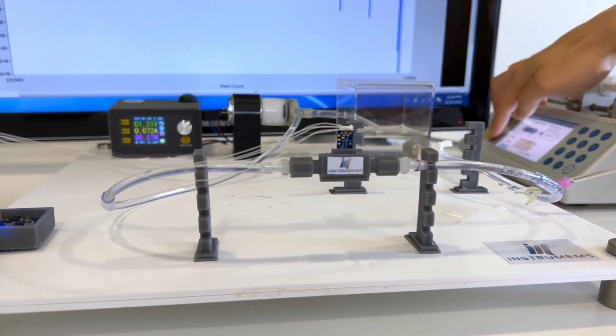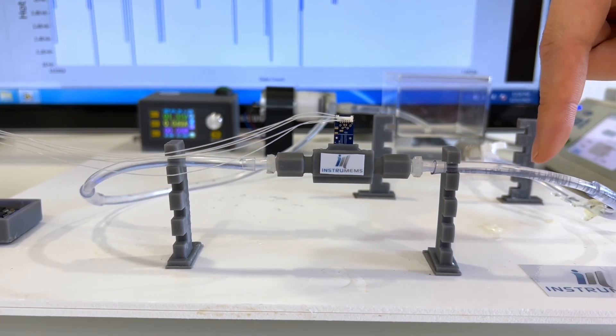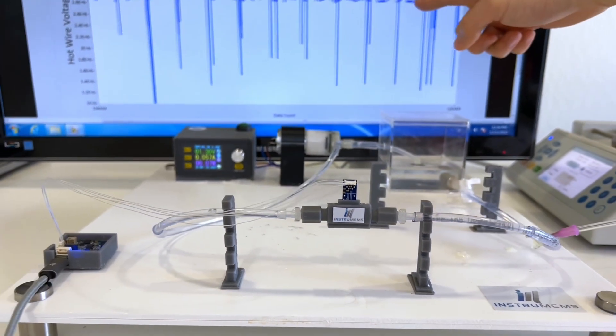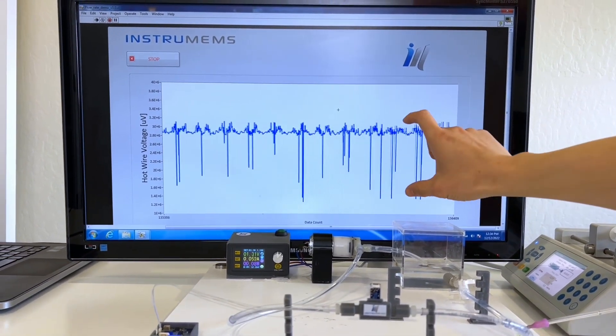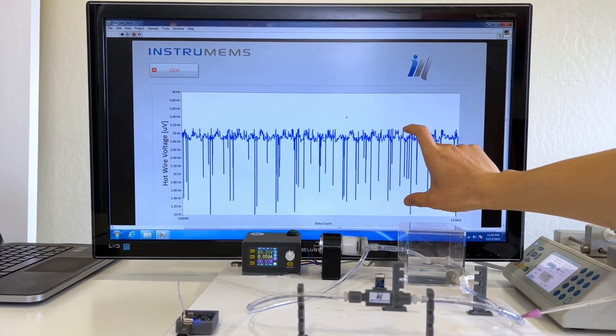You can see bubbles of varying sizes passing through the sensor. The display shows the sensor's response to the bubbles. The voltage output swings low every time there is a bubble present.